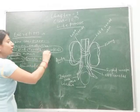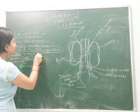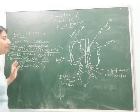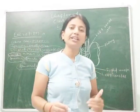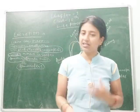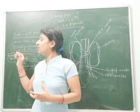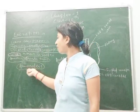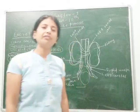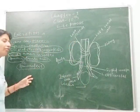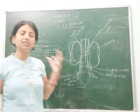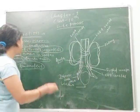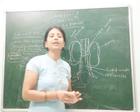So to summarize: uricotelic animals release urea as uric acid, ureotelic animals release it as urea, and ammonotelic animals release it as ammonia. Ammonia is water-soluble, so aquatic organisms including fish release it as their excretory product. Our main focus now is excretion in human beings.